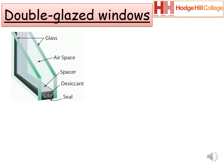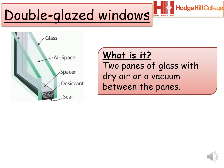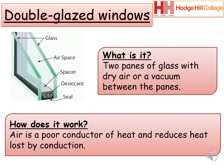Double glazed windows. Double glazing is two layers of glass separated by either dry air or a vacuum. If air is used, a desiccant is used to keep the air dry. This cuts down heat loss through conduction because air is a poor conductor of heat. The heat loss is reduced if more panes of glass are used.